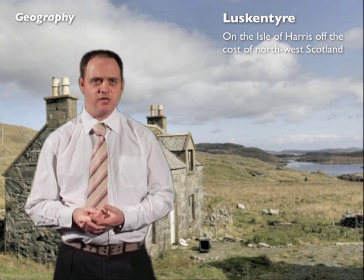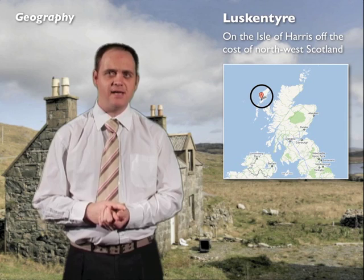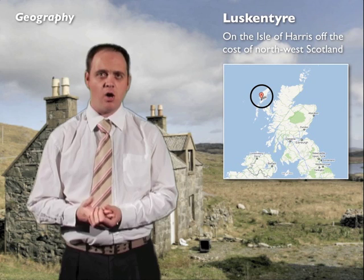Luskintyre provides the location and setting for Aunt Julia, and this is where McCaig's childhood visits to his aunt took place. It's a very small community on the Isle of Harris, off the coast of north-west Scotland. Being an island makes it very remote and isolated, as you can see here on this map, and it's far from more highly populated towns and cities.